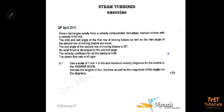The statement reads: steam is discharged axially from a velocity-compounded two-stage impulse turbine with a velocity of 80 meters per second. From the first sentence, we are told steam is discharged axially — axial discharge is perpendicular discharge — therefore beta 2 equals 90 degrees. The discharge velocity v4 is 80 meters per second, so we have the discharge angle and the discharge velocity at the exit of the second stage.